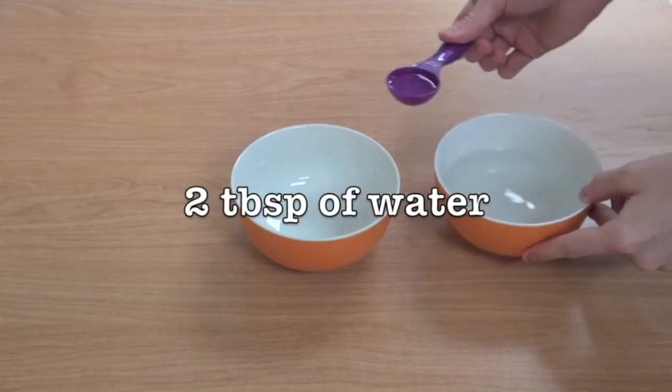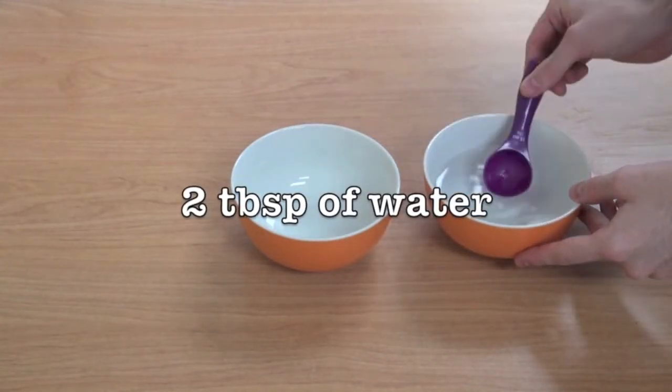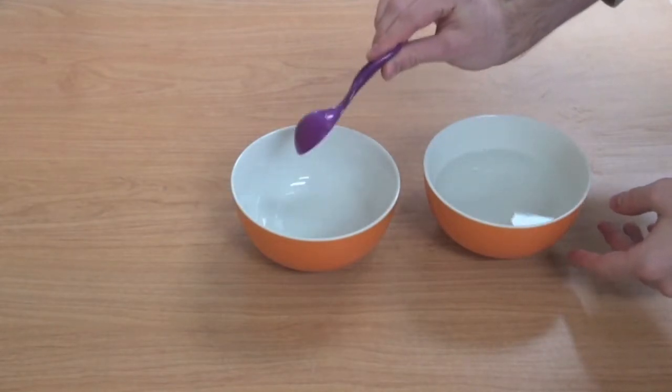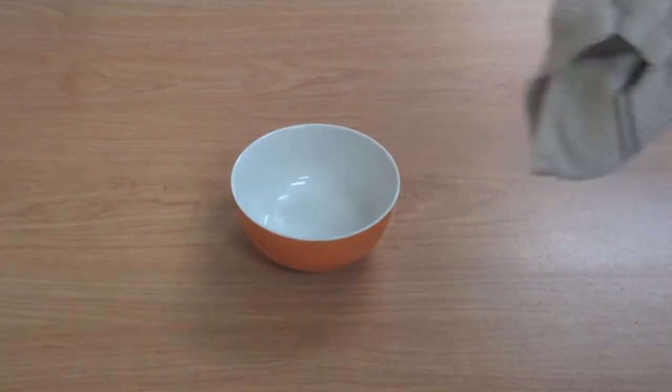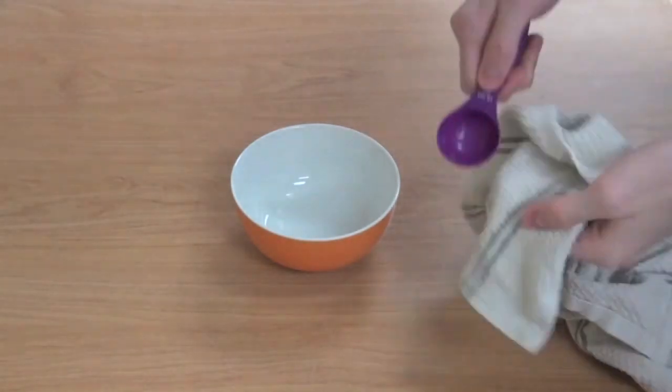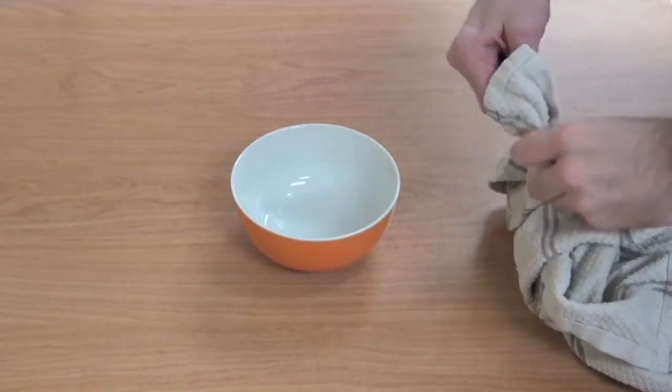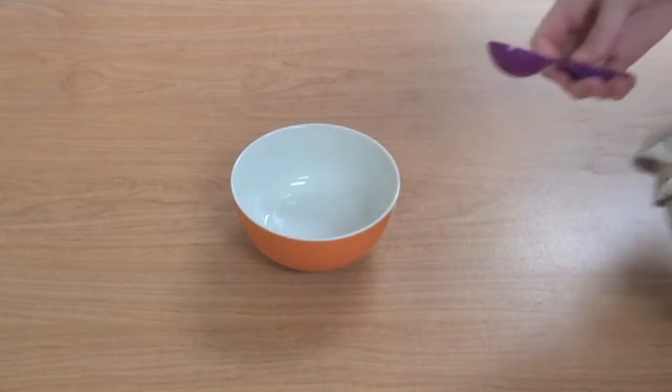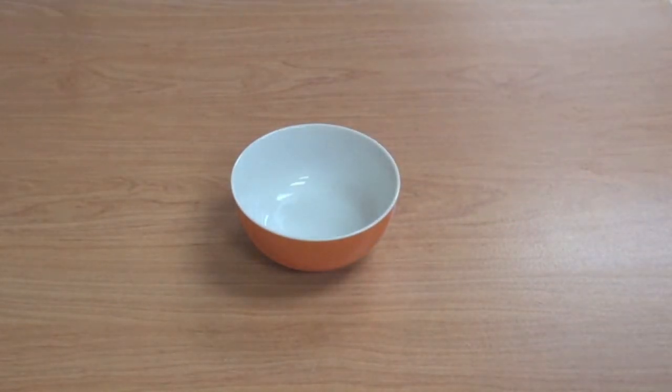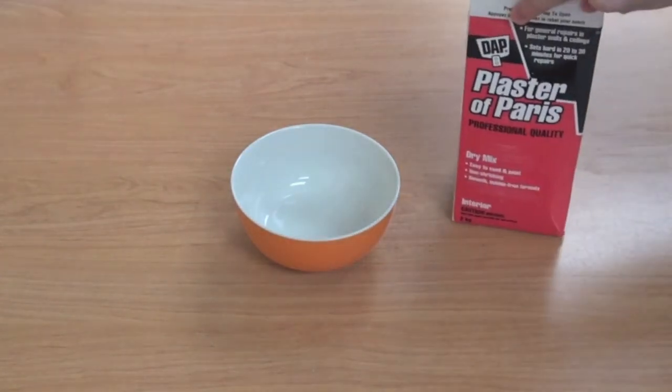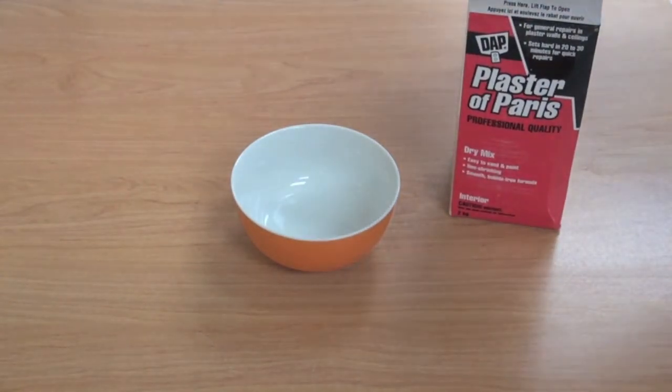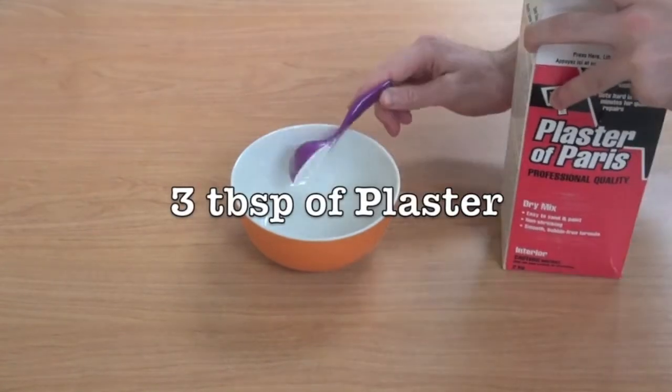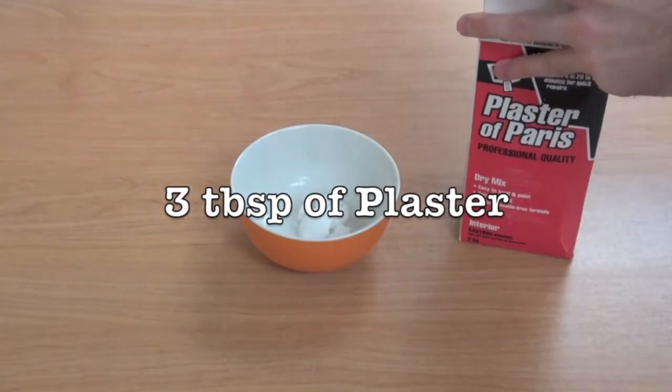First you start off with two tablespoons of water. Next, make sure that your spoon is completely clean and dry of water before dipping it into the plaster. Then you're going to need three tablespoons of plaster.